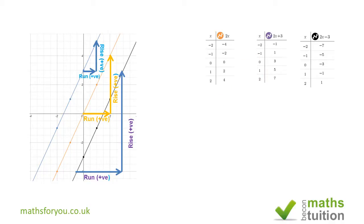As mentioned earlier, you must make y the subject. For example, if you're given 2y = 2x + 4 and asked to draw the graph, divide every term by 2 to get y = x/2 + 2, and then you can draw the graph. I hope that all made sense — please subscribe and thank you for watching, bye!